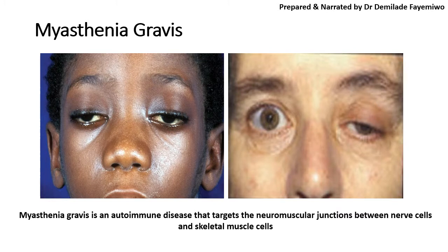An example of an autoimmune condition is myasthenia gravis. This is a condition that you have to know according to your syllabus. It is an autoimmune disease that attacks the neuromuscular junctions between the nerve cells and the skeletal muscles, especially around the eyes. You usually see that people who have myasthenia gravis will have a droopy eye, or they would have both eyes looking droopy. This is simply a result of the cells being attacked by the immune system and so unable to transmit information as they should.